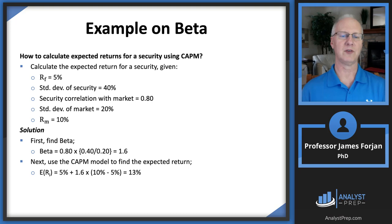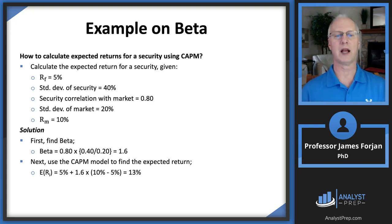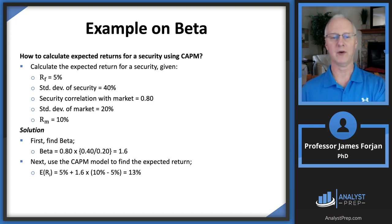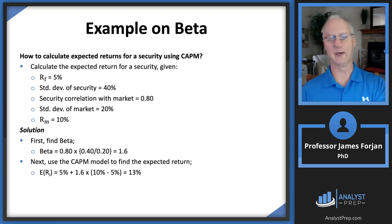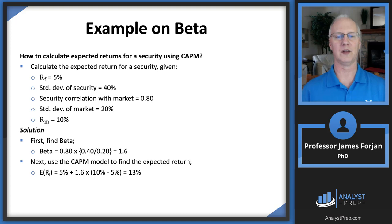Using beta of 1.6 as input, we get an expected return of 13%. On an exam, don't violate the distributive property — always do inside the brackets first. Take 10 minus 5 = 5%, multiply by 1.6 = 8%, then add the risk-free rate of 5% to get 13%. If you enter 5 + 1.6 × 10 − 5 in your calculator without brackets, you'll get a wrong answer. Always start with the inside of the brackets.